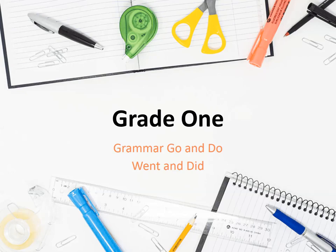Hello Grade 1 students! Today we are going to take a new grammar lesson about the usage of the two verbs: go and do. We have to know that the verb 'go' is in present tense, and the past tense of the verb 'go' is 'went.' The verb 'do' is in present, and the past tense of it is 'did.'